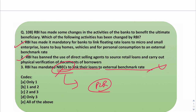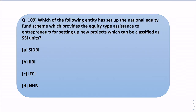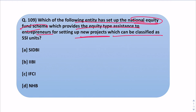So the correct answer is option B, that is statements one and two. Now the next question asks which entity set up the National Equity Fund Scheme, which provides equity-type assistance to entrepreneurs for setting up new projects classifiable as SSI units. The correct answer is SIDBI, option A.